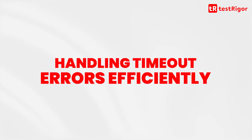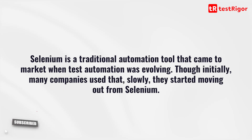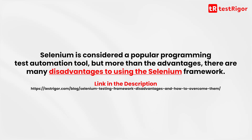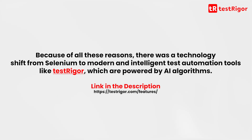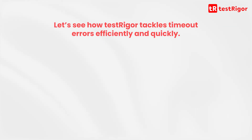Handling timeout errors efficiently. Selenium is a traditional automation tool that came to market when test automation was evolving. Though initially many companies used it, slowly they started moving out from Selenium. Selenium is considered a popular programming test automation tool, but more than the advantages, there are many disadvantages to using the Selenium framework. Because of all these reasons, there was a technology shift from Selenium to modern and intelligent test automation tools like TestRigger, which are powered by AI algorithms. Let's see how TestRigger tackles timeout errors efficiently and quickly.